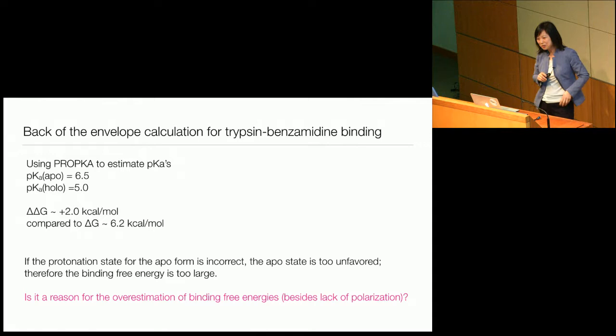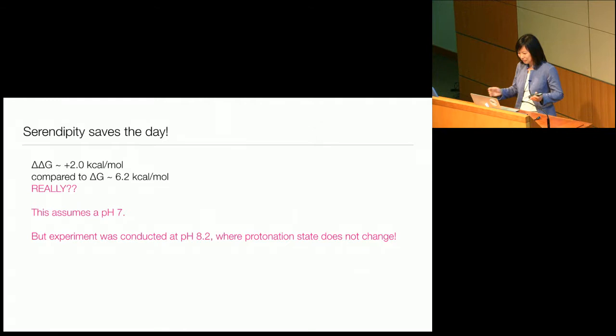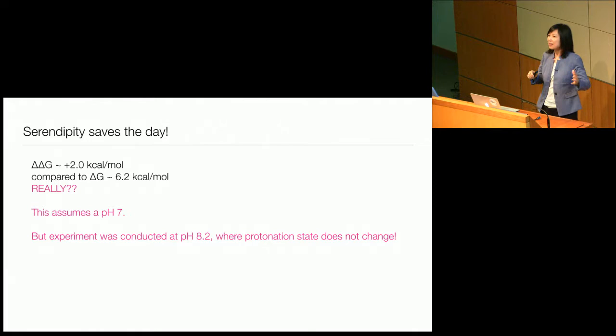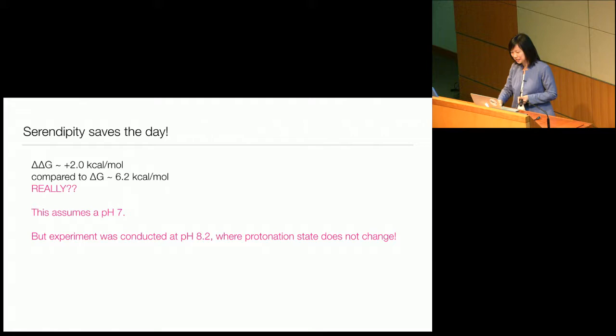It turns out, for 20 years the interested state was actually pH 8. We assumed pH 7 — that's how I got the correction. But it turns out the experiment was conducted at pH 8.2. At that condition, the protonation state does not change. So at pH 8, none of this really matters. Thank you very much.